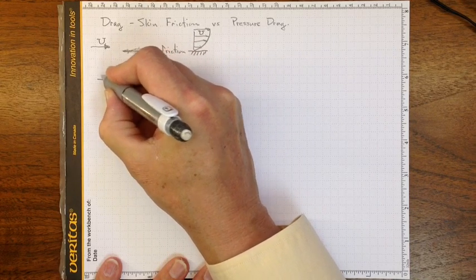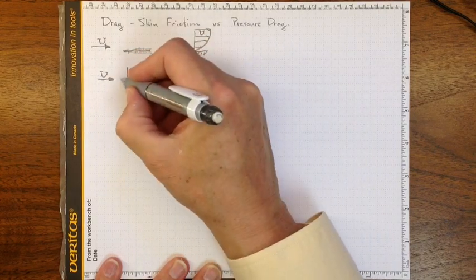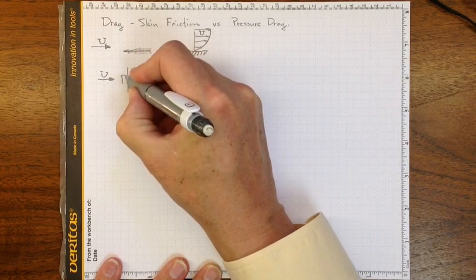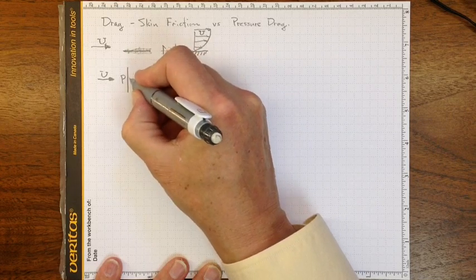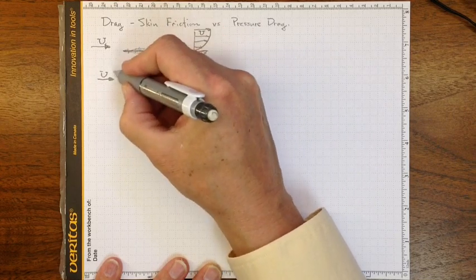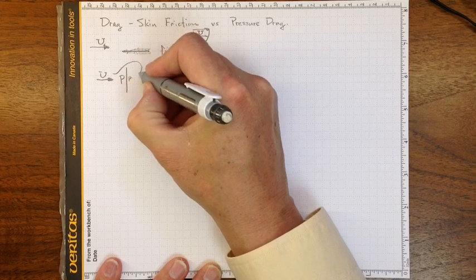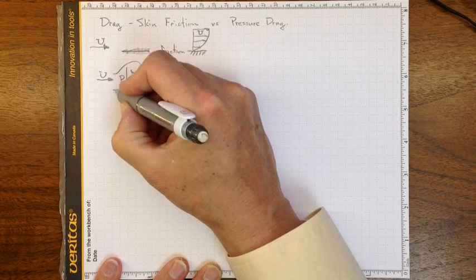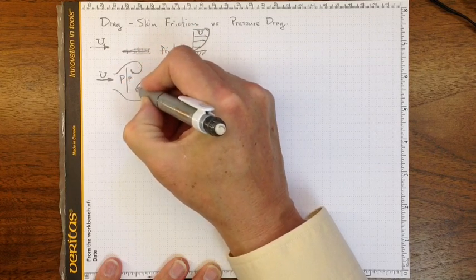then that piece of plywood in that wind is going to have a high pressure on this side, and a lower pressure on this side, and the flow is going to go around it and swirl around something like this,